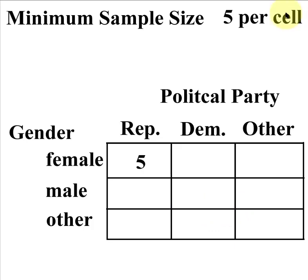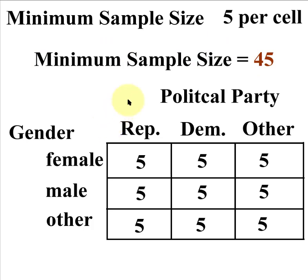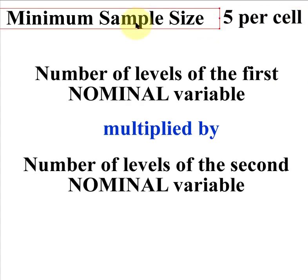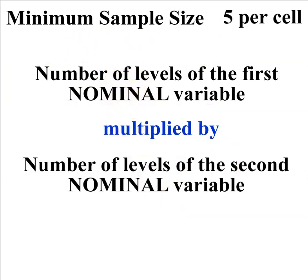You've got nine cells, and with a minimum sample size of five per cell, you put five in each and add them all up. That looks like nine times five, which is 45. So the minimum sample size for this specific problem is 45. The rule of thumb is: take the number of levels from the first nominal variable, multiply by the number of levels of the second nominal variable, then multiply that product by five to get the minimum sample size.